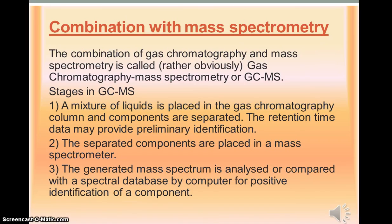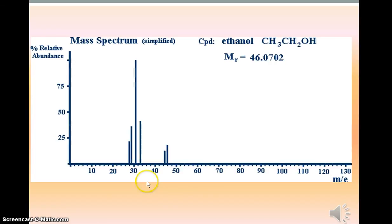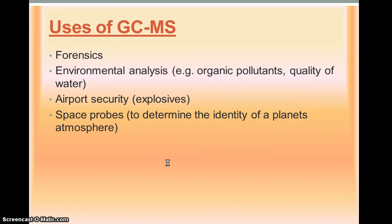We can combine gas chromatography with mass spectroscopy, which is imaginatively called GC-MS. Basically, the mixture goes through the gas chromatography apparatus where they're separated. Retention times may give us some information, and then they're passed into a mass spectrometer which can identify them quite accurately using their MR and the spectral database. Here, if you've forgotten, is a typical example of a mass spectrum. The MR is the value furthest to the right. GC-MS is used in forensics, environmental analysis, airport security and space probes.